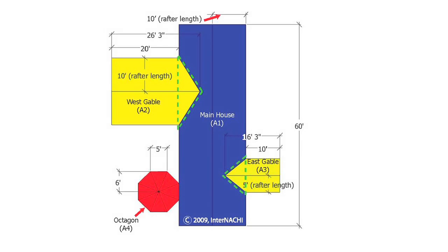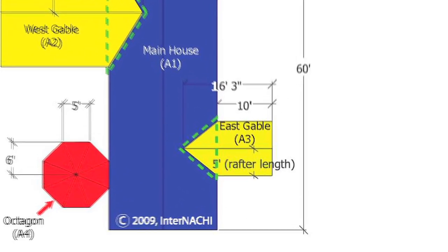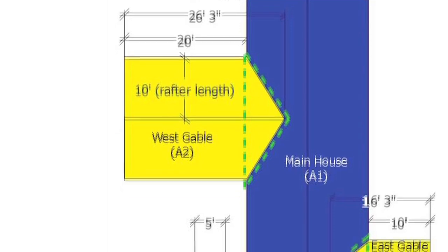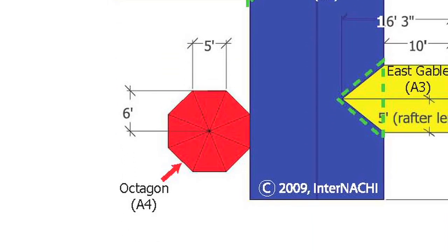Let's take a complex house roof as an example and calculate its total square footage. This complex roof has the lengths of various geometric shapes measured. The main house roof is a large gable roof. The front entry has a small gable roof, the rear deck has a hip roof, and there's a gazebo roof attached to the back of the house. Let's calculate the area of this complex roof in total square footage.